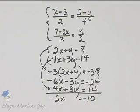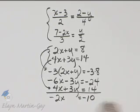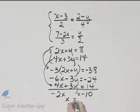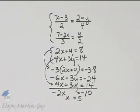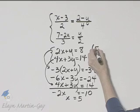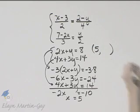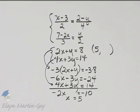And if I divide both sides by negative 2, I'll have that x is 5. Negative 10 divided by negative 2, that's 5. So I have an x value for an ordered pair solution.